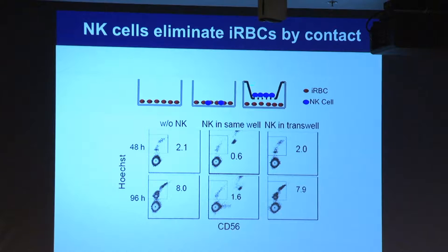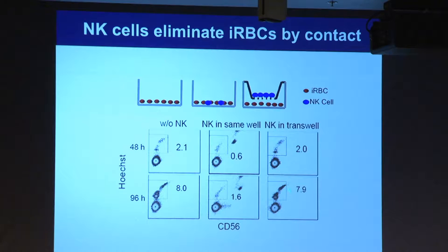If we put the human NK cells in a transfer well so that soluble factors can pass through but there is no cell contact, you can see the infection is not controlled. So this requires cell-to-cell contact.